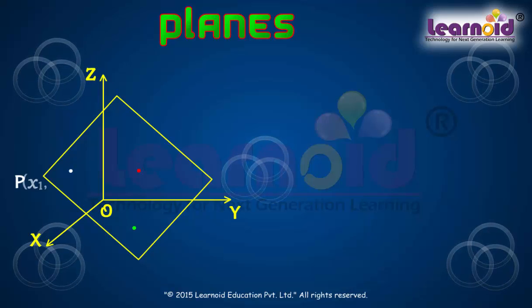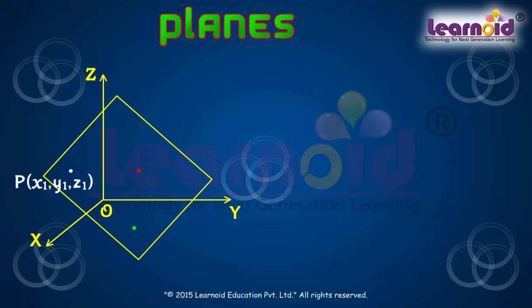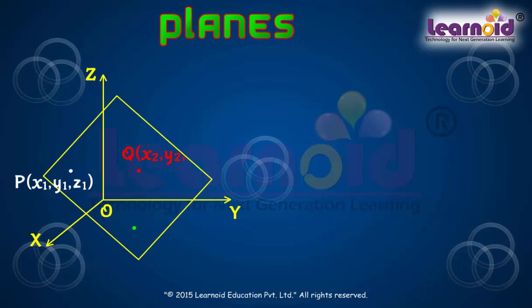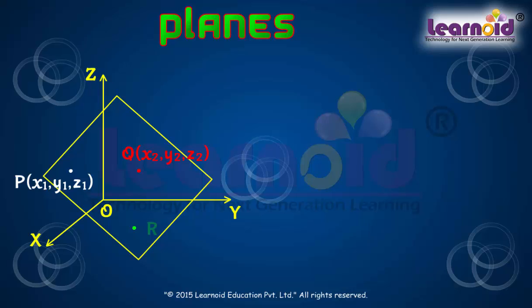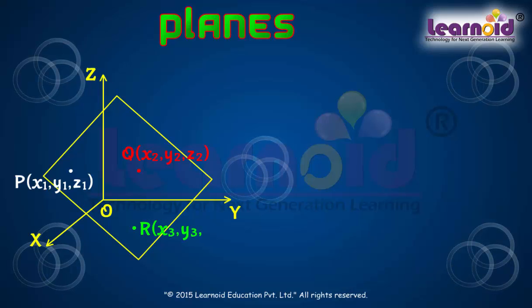The three non-collinear points are: P(x1, y1, z1), Q(x2, y2, z2), and R(x3, y3, z3).